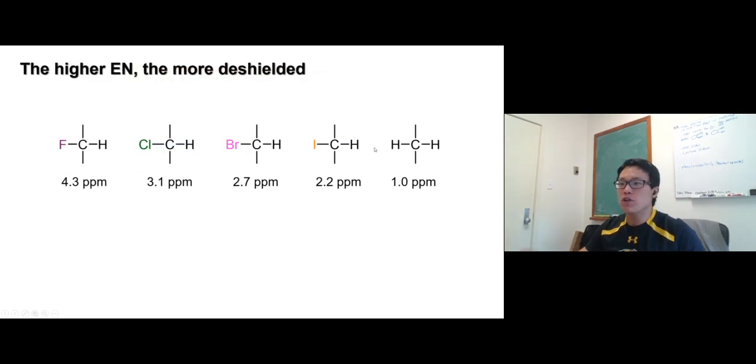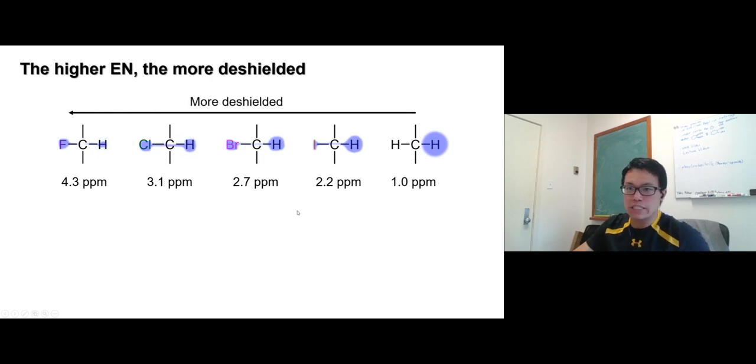The electronegativity - you guys know the trend - the higher electronegative atom, the more deshielded the hydrogen is. Starting with hydrocarbon 1, iodine 2, bromine 2.7, chlorine 3, fluorine 4. The more number of electronegative atoms, the more deshielded the proton is. Take a look: two chlorine 5.3, three chlorine 7.3.